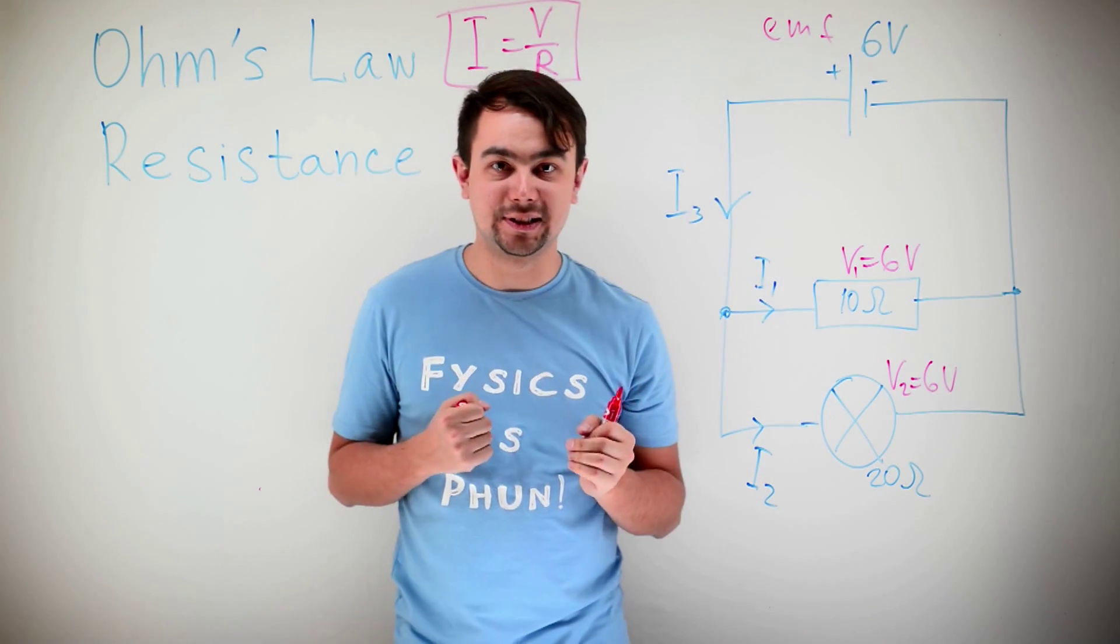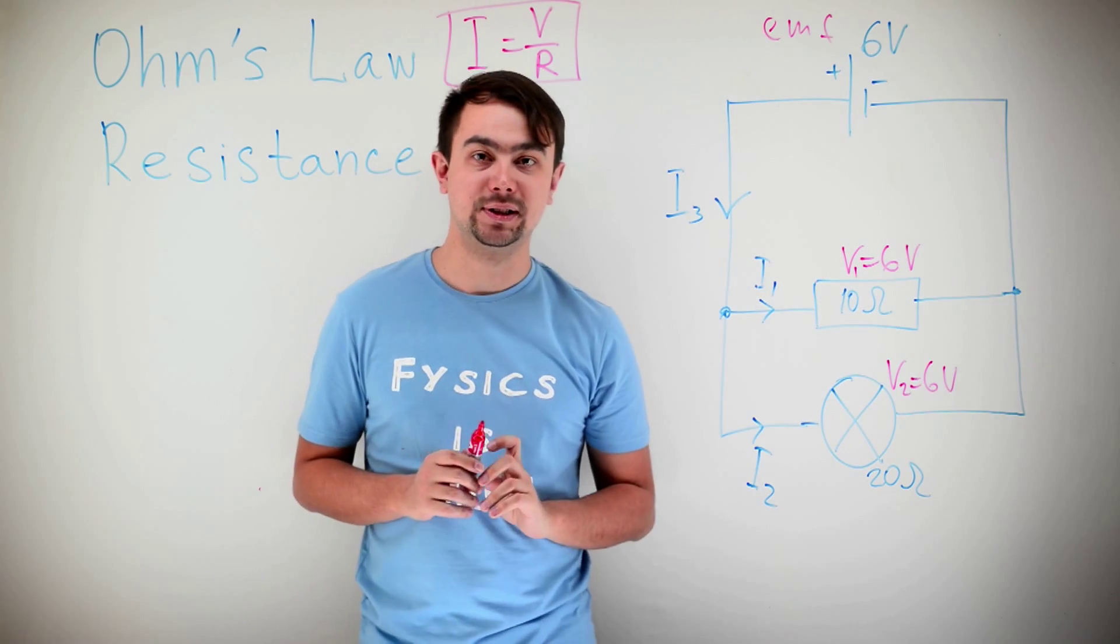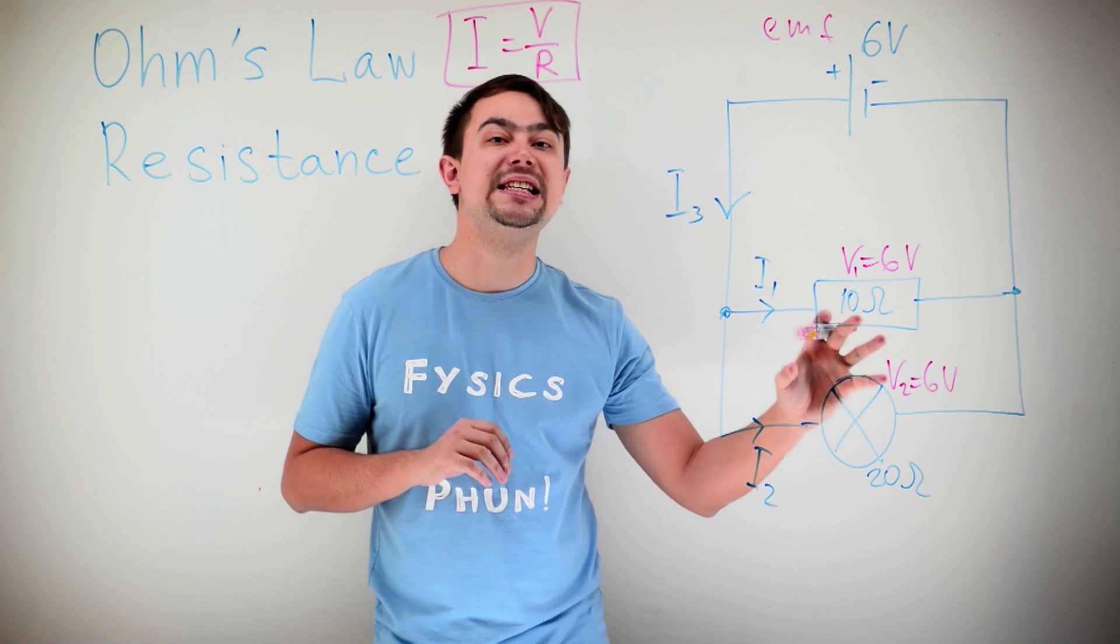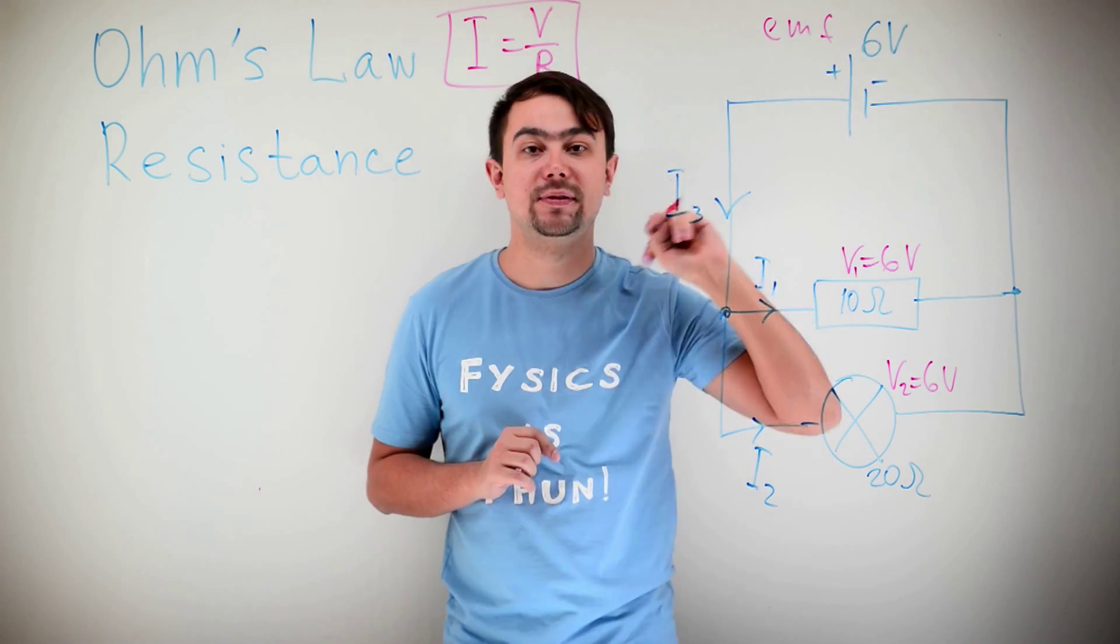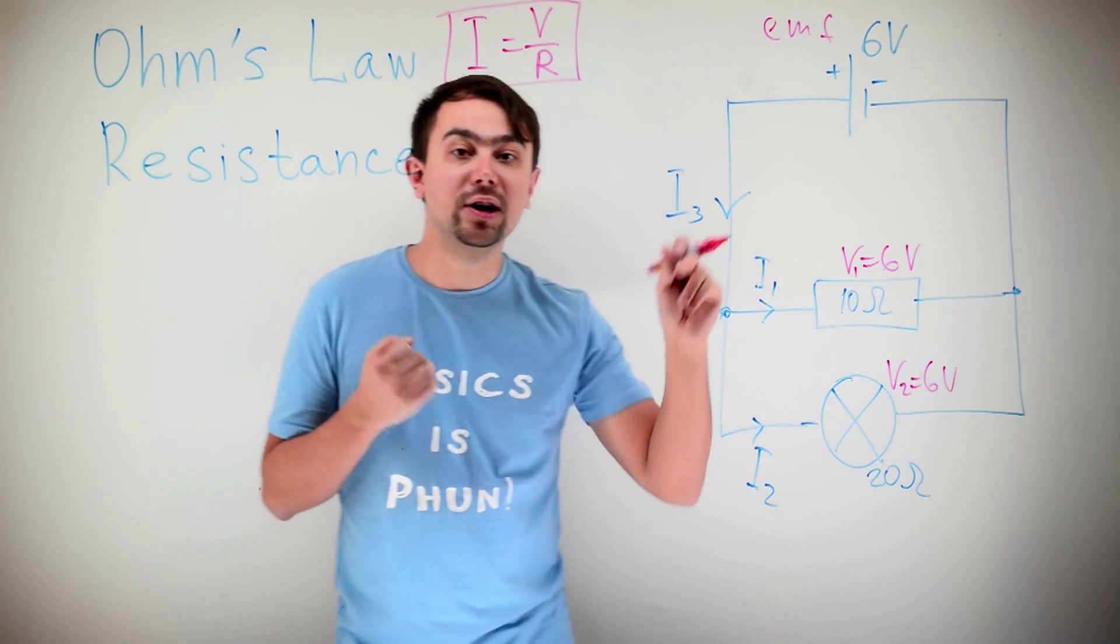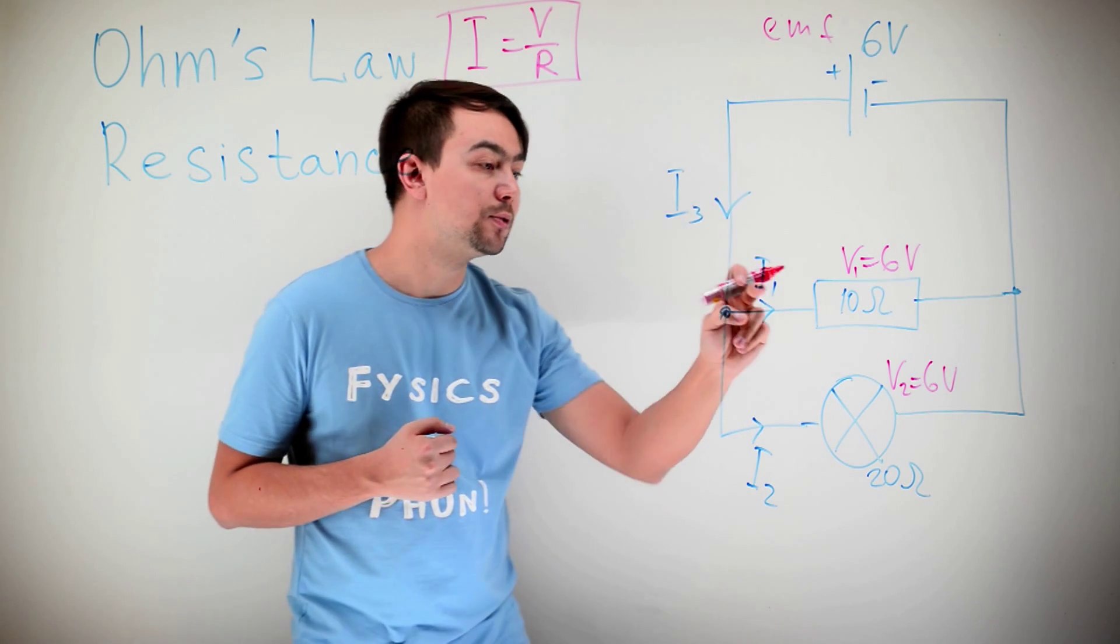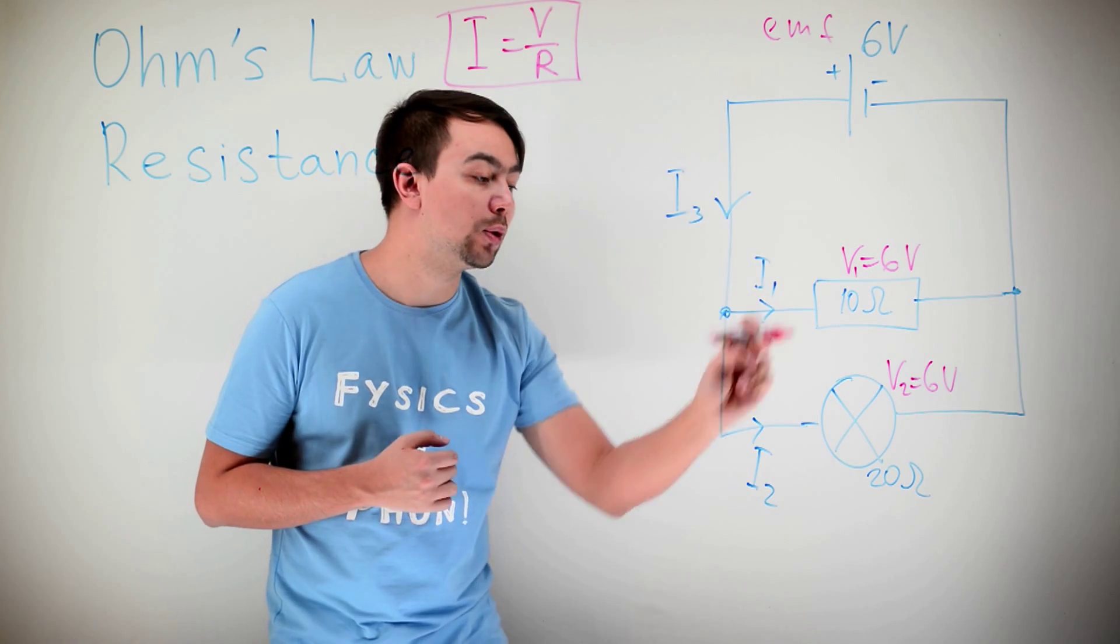Now, let's look at a simple parallel circuit. A parallel circuit is when the elements are connected in parallel to each other. In this case, the voltage on each element is equal to the voltage on the battery. That is EMF, which is 6 volts. The current, on the other hand, splits. The current here is equal to I1 plus I2. So I3 is I1 plus I2.